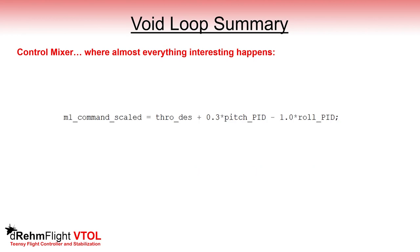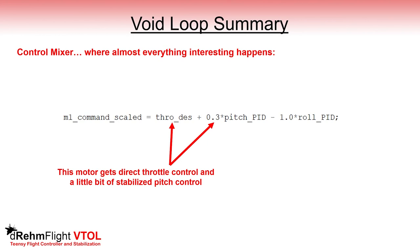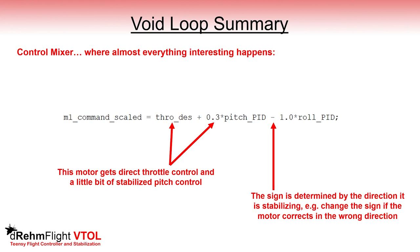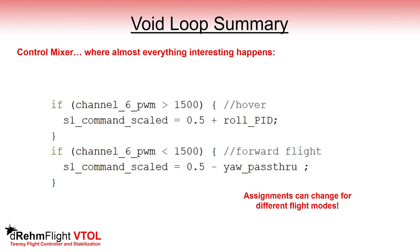The command scaled variables in the control mixer can get any combination of assignments required. For example, a motor can get direct throttle control and then stabilized pitch control, with the pitch PID variable multiplied by 0.3 to reduce its effectiveness for that case. The sign of these assignments is determined by the direction the actuator is trying to stabilize — if the direction is incorrect, the sign needs to be reversed. In the control mixer, you can make different assignments for different flight modes using a simple binary assignment based on the value of the radio receiver channel 6 variable. More advanced control mixing techniques and ways to cleanly fade between flight modes will be covered in another video.